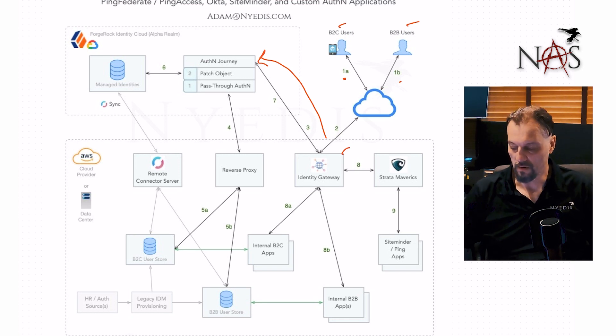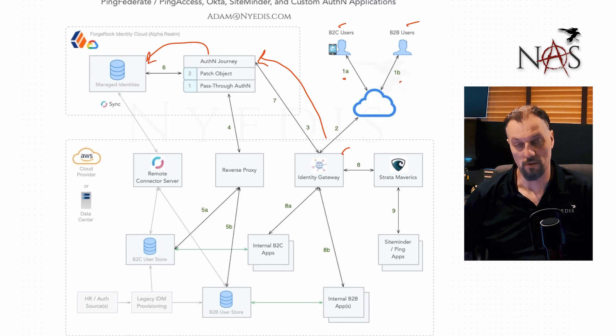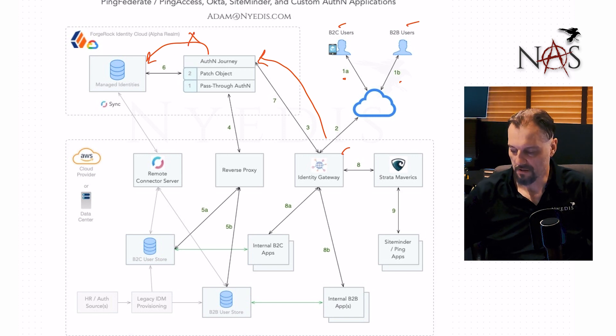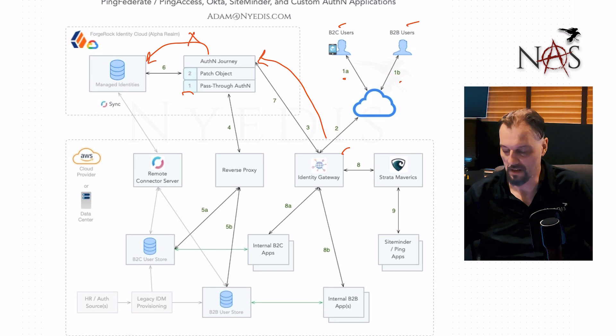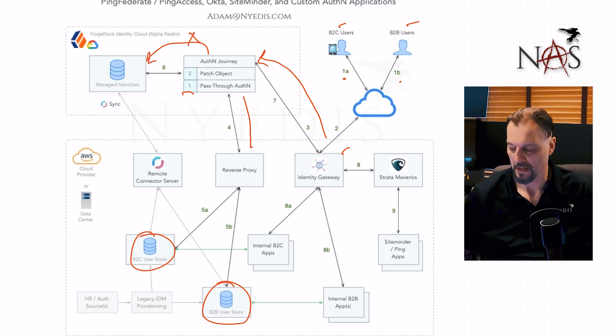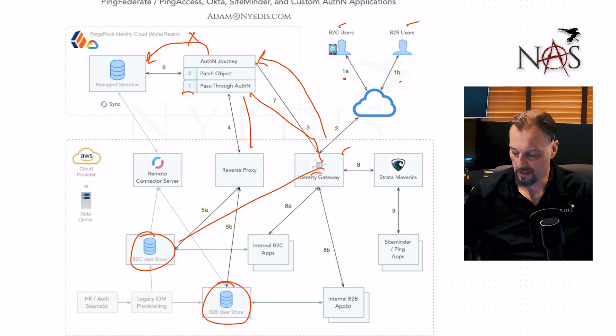When the authentication journey begins, it first attempts to authenticate the user against the managed identity store. In our case it fails — either because users were never imported or because passwords couldn't be imported. So the authentication journey then hits the pass-through authentication node, which passes the authentication on to something else. In this diagram it goes through a reverse proxy and hits either the B2B or B2C back-end user store depending on user type.